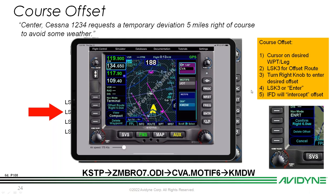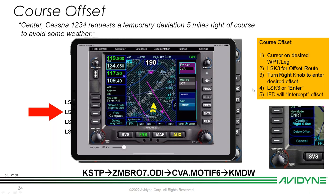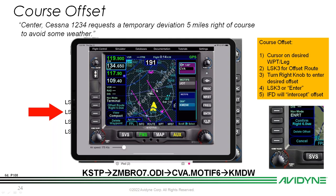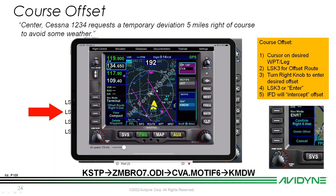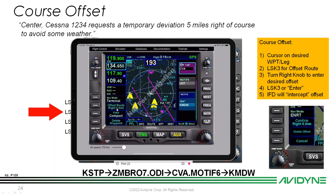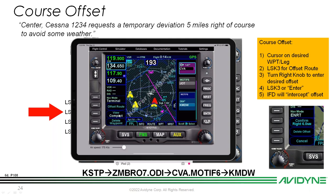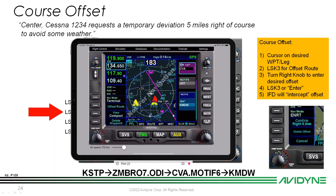On the map page you can see the magenta line for the original course and the hashed dashed line for the offset course. Once we reach the Motif 6 arrival — a published procedure — the offset disappears automatically. To manually delete the offset, tap the offset route line select key and select 'Delete Offset.' If the autopilot is coupled, the aircraft will fly back to re-intercept the original course line.